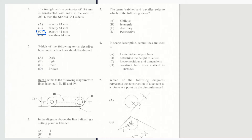Now we are on to question number 2. Which of the following terms describes how construction lines should be drawn? Is it A dark, B light, C a chain, or D broken? And of course our answer would be B — construction lines should be light.